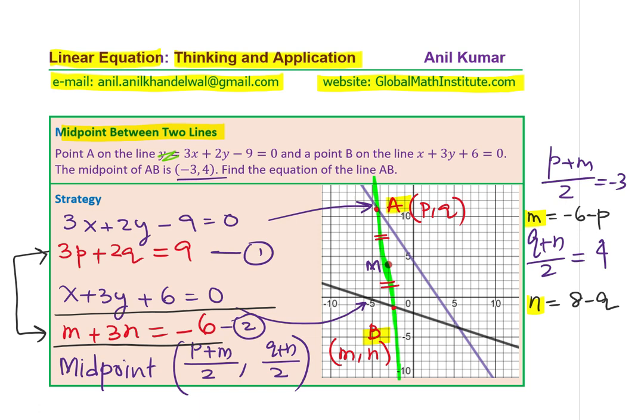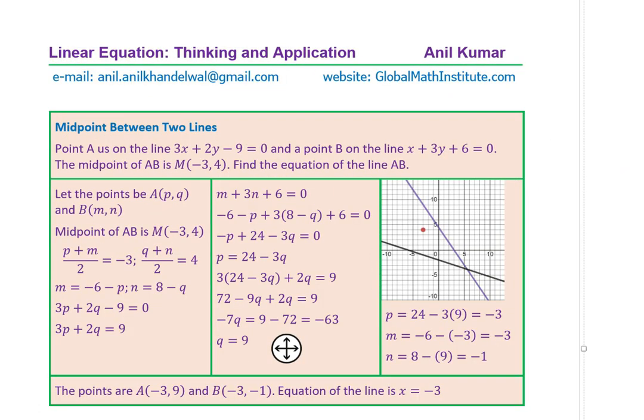Let's see a shortcut to these suggestions. All right. So again, the question here is point A is on the line 3x plus 2y minus 9 equals 0. And point B is on the line x plus 3y plus 6 equals 0. The midpoint of AB is M(-3, 4). Find the equation of the line AB.